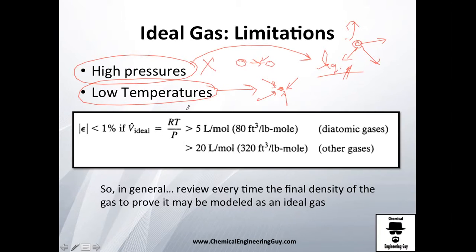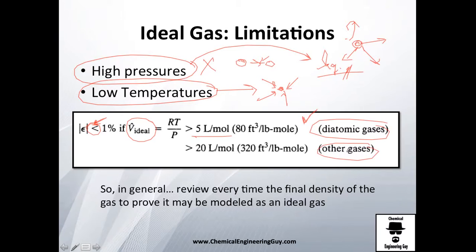What counts as high or low pressure depends on the gas, but as a rule of thumb: for atomic gases, calculate the specific volume — if it's around 5 liters per mole you'll have a small error range. For most other gases, the specific volume should be at least 20 liters per mole. At around 200 liters per mole, your error will be approximately 1%.